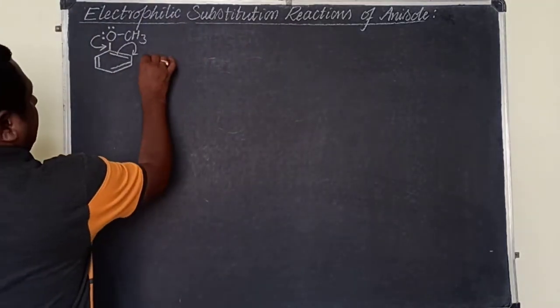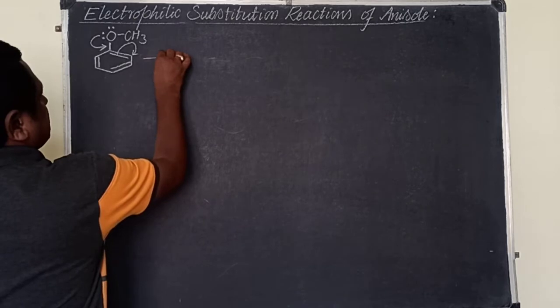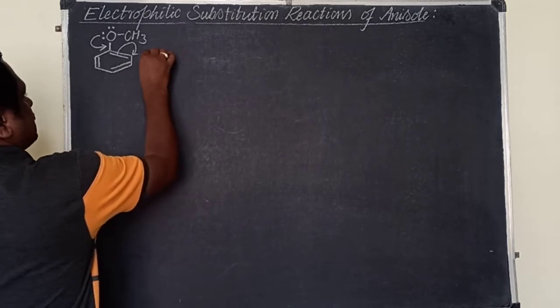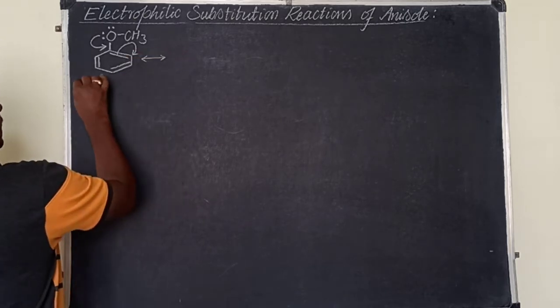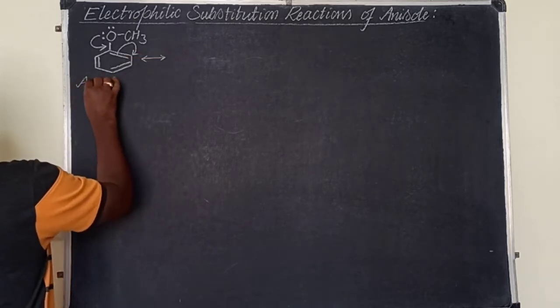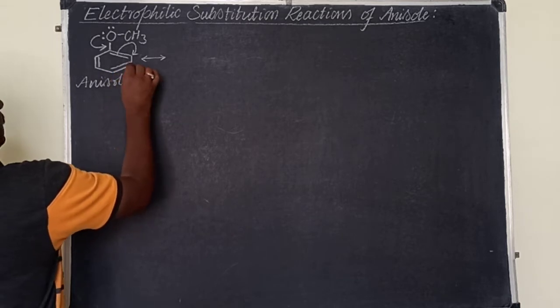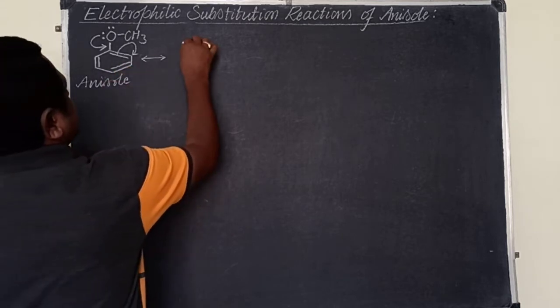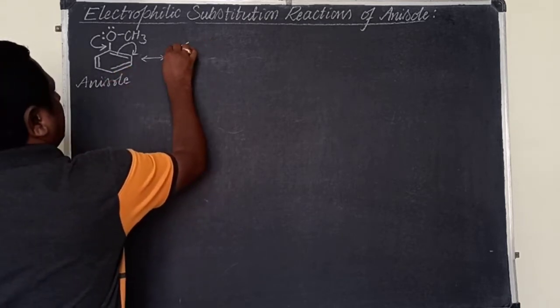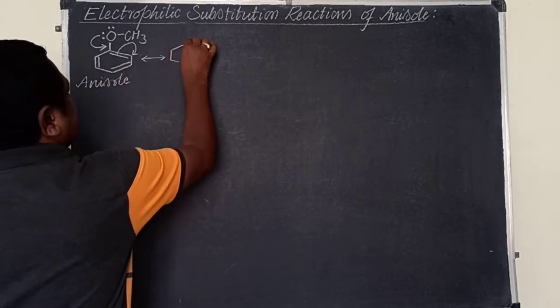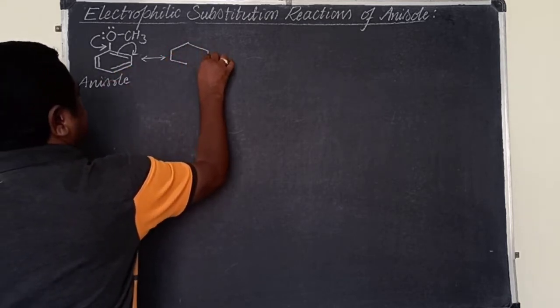I recommend you write the resonance structures of anisole. Let's get the first resonance structure.